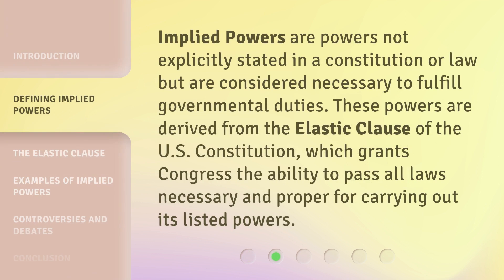Implied powers are powers not explicitly stated in a constitution or law but are considered necessary to fulfill governmental duties. These powers are derived from the Elastic Clause of the U.S. Constitution, which grants Congress the ability to pass all laws necessary and proper for carrying out its listed powers.